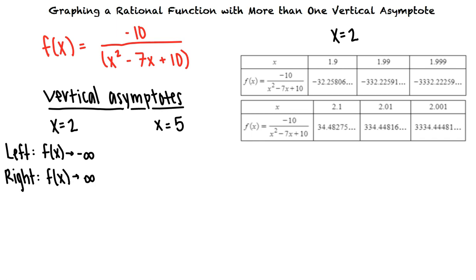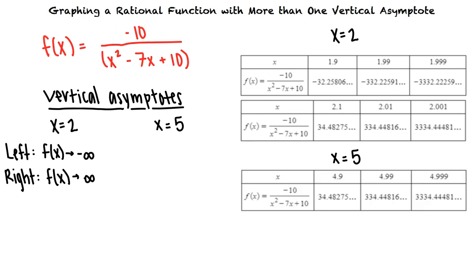Now we need to look at the asymptote x equals 5. We can evaluate f of x for some values of x less than 5 but getting close to 5. We can see that as x approaches 5 from the left, f of x increases without bound. This means that f of x approaches infinity as x approaches 5 from the left.